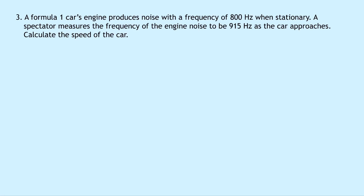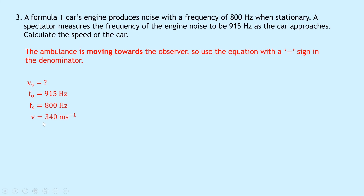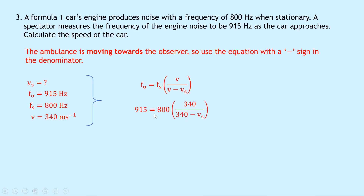Question 3 says that a Formula 1 car's engine produces noise with a frequency of 800 hertz when stationary. A spectator measures the frequency of the engine noise to be 915 hertz as the car approaches. Calculate the speed of the car. Since the car is moving towards the observer, we use the equation with a negative sign in the denominator. We're finding VS; FO is 915 Hz, FS is 800 Hz, V is 340 m/s. Writing down our equation: FO equals FS times V over (V minus VS), substituting gives 915 equals 800 times 340 over (340 minus VS).